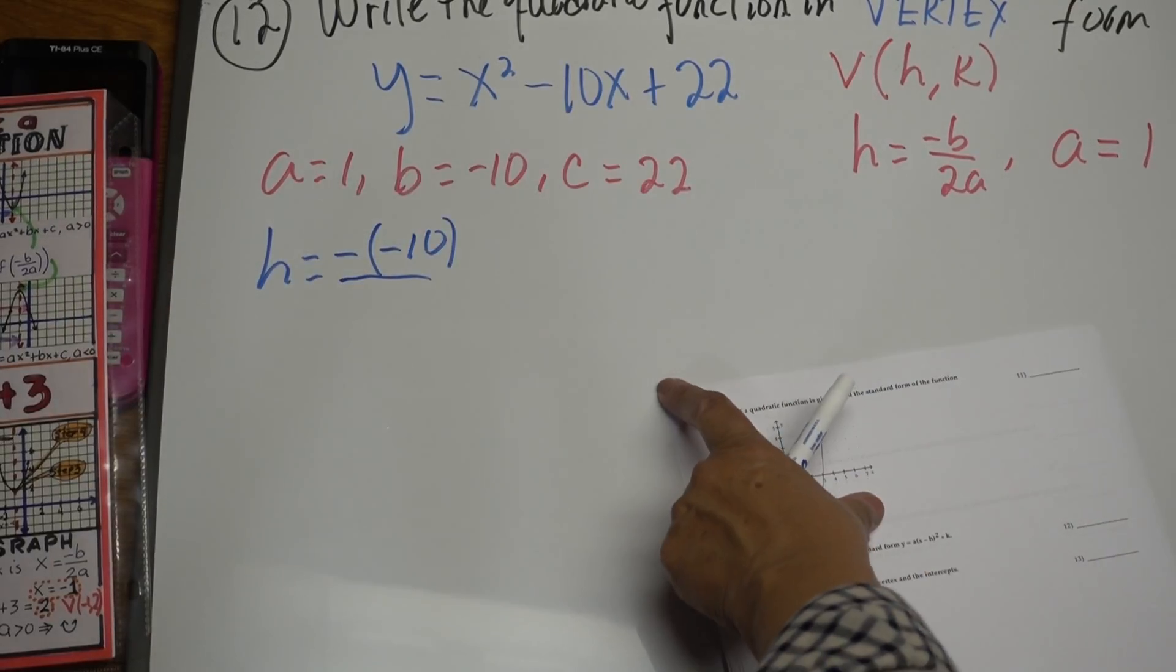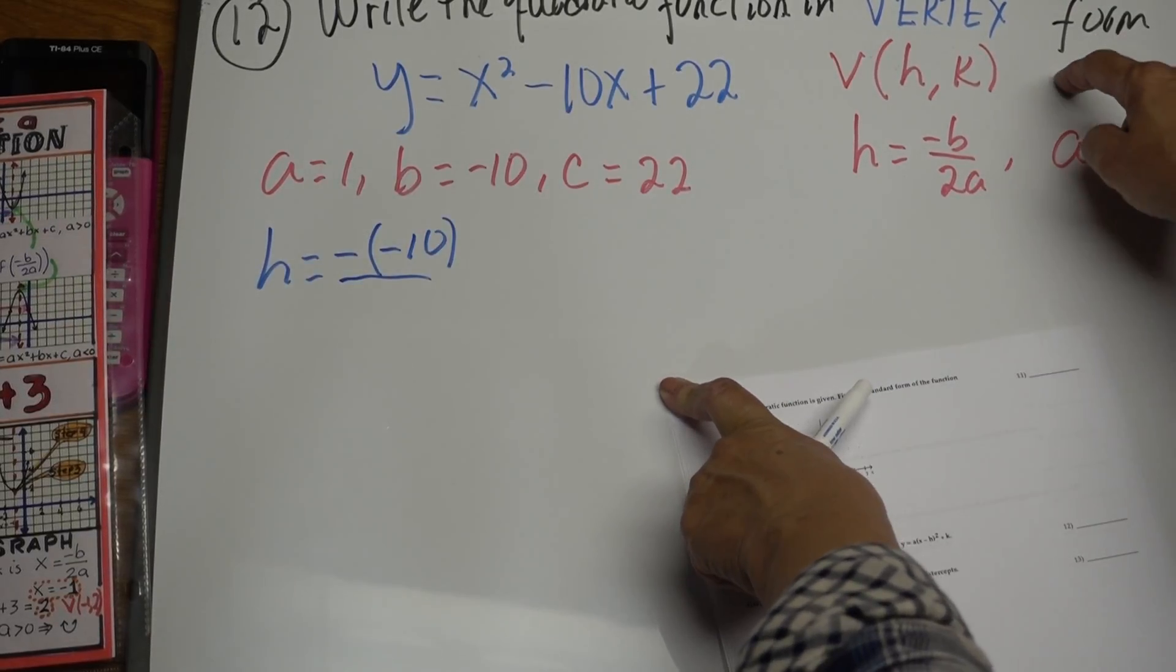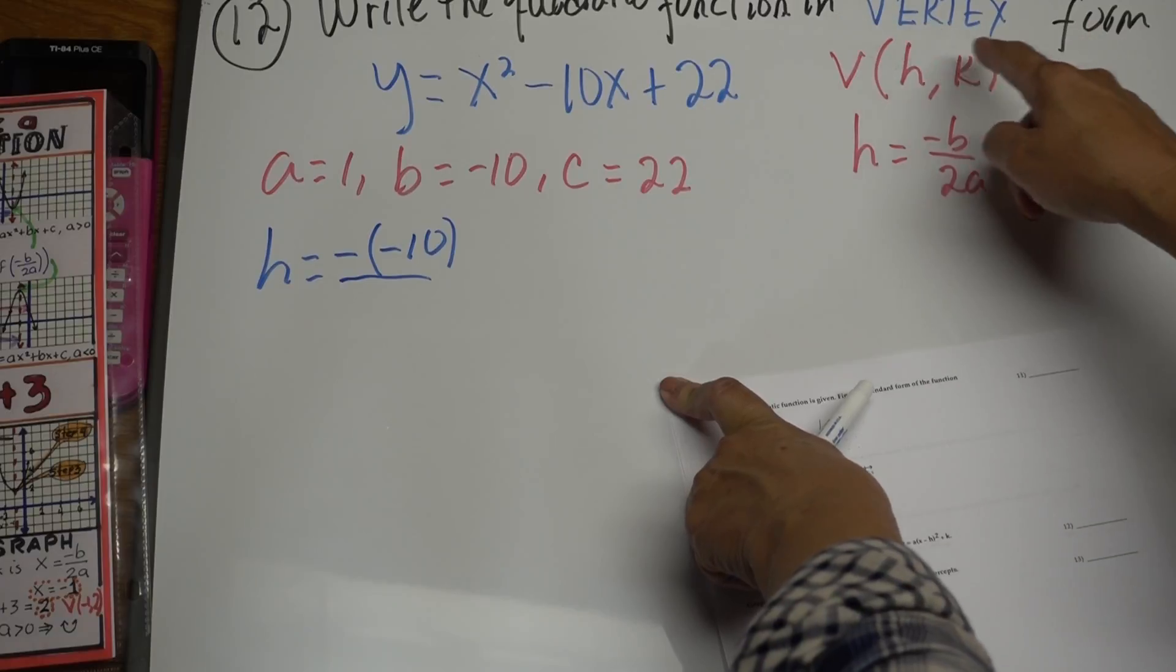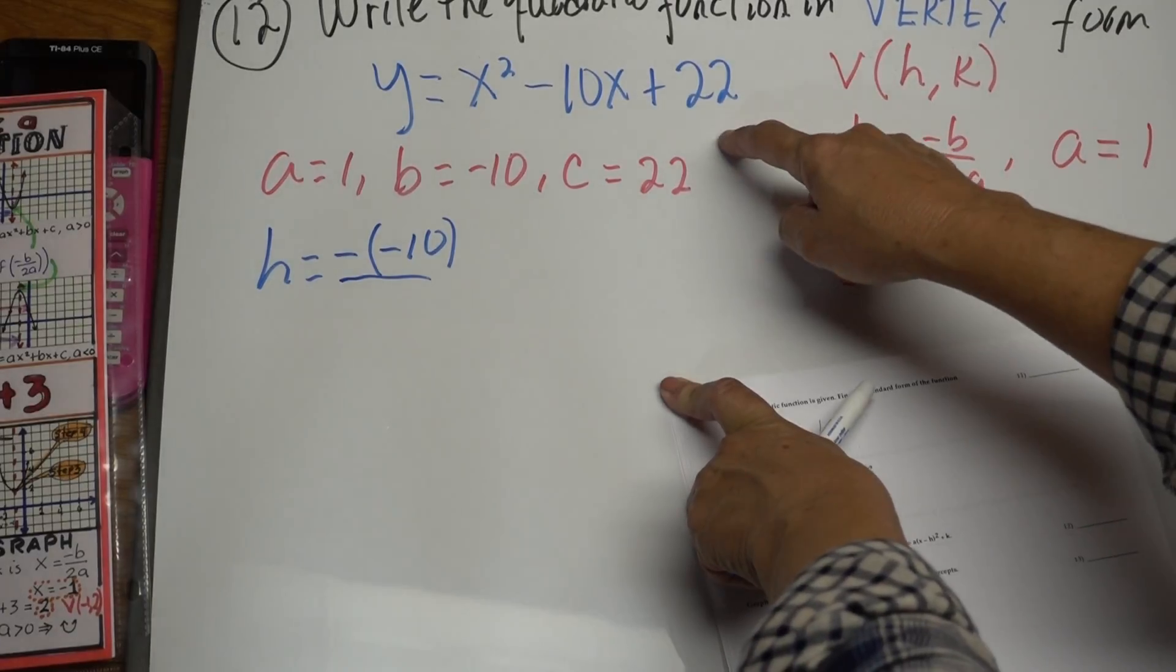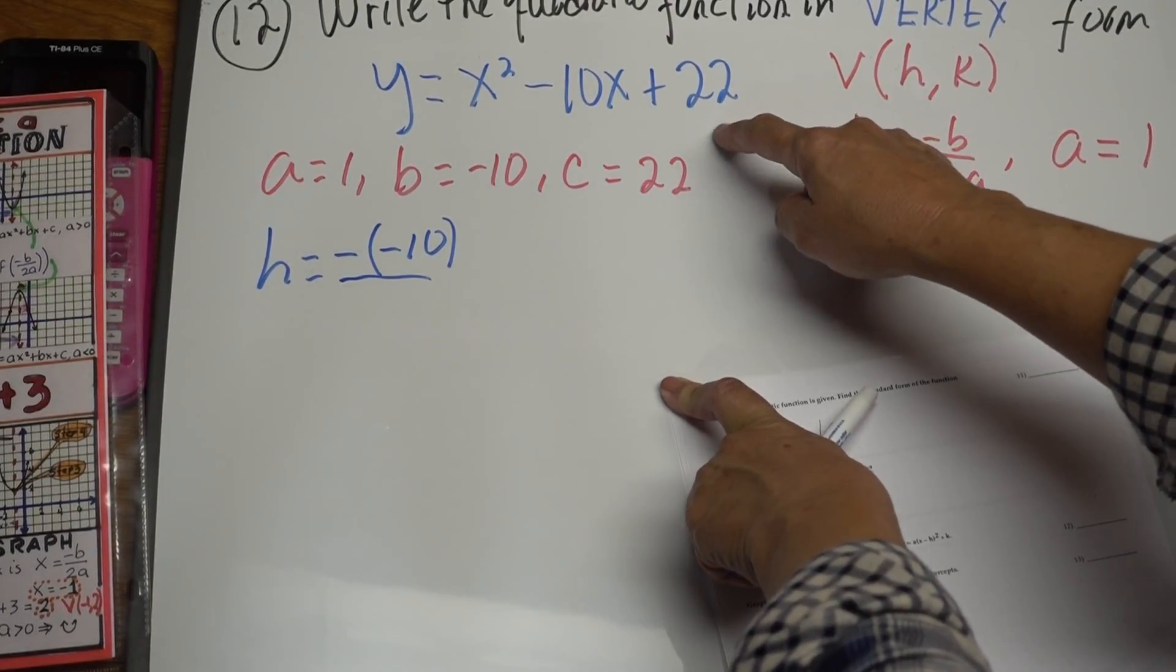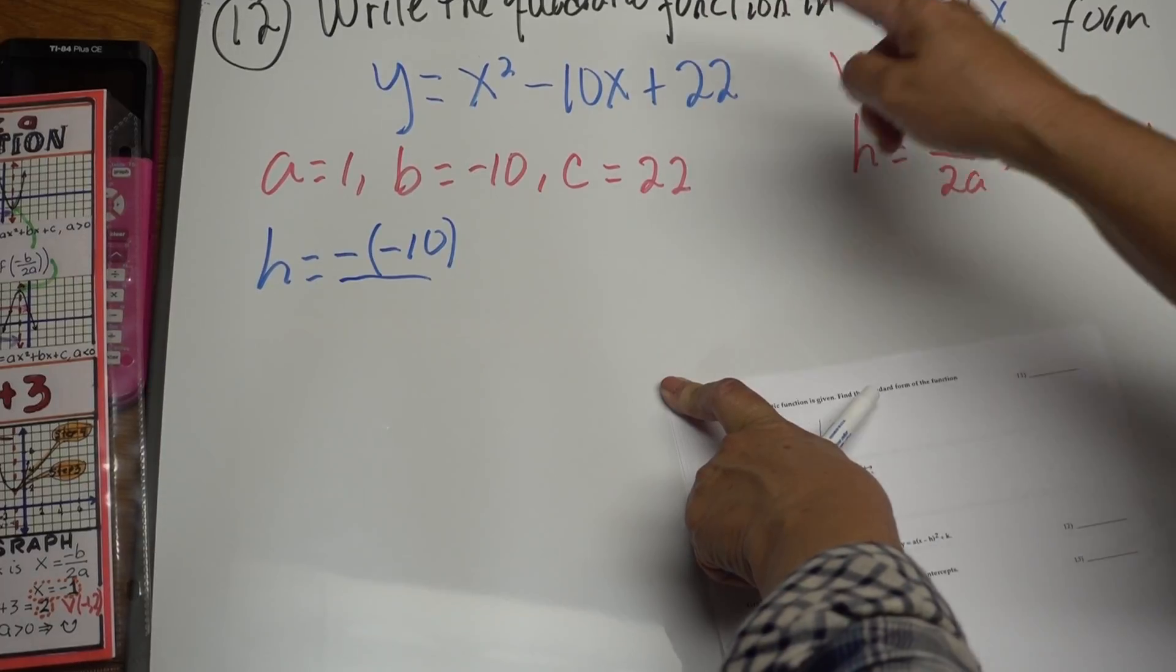I just want to clarify that in the review, it says write the standard form. The standard form is given. So we have to pass from standard to vertex form.